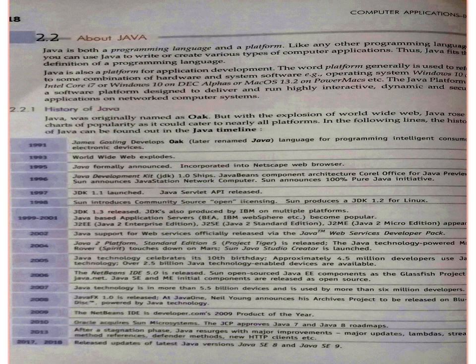That's the reason when we create any program using any specific computer language, that particular language depends on a particular operating system and it can execute its object file on that operating system itself — nowhere on another operating system. But Java, when it generates the object file, it generates it in the form of bytecode, and that can be executed using the Java Virtual Machine on any other operating system. Java Virtual Machines are dependent on a specific platform and they can easily translate the bytecode generated.